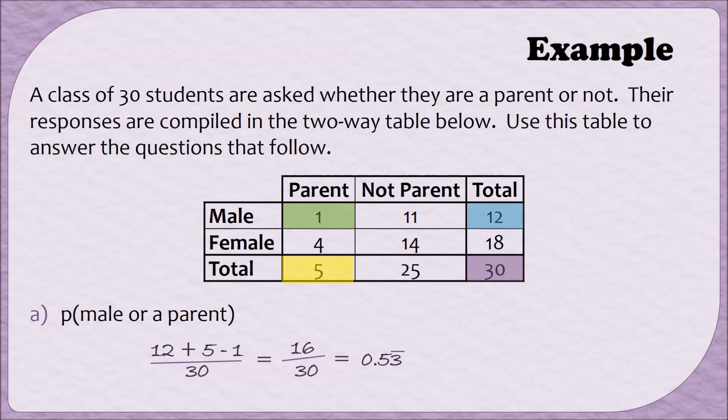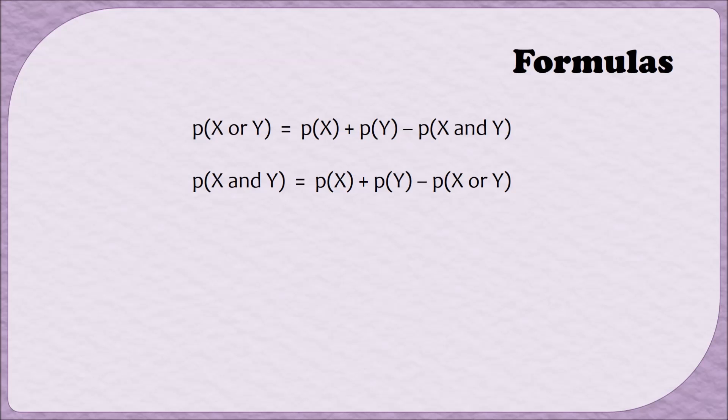So here's what that formula looks like. The first formula is the one that we just mentioned. You can find the probability of X or Y by finding the probability of X plus the probability of Y and subtracting the probability of X and Y. If you rearrange that first formula you can end up with the second formula. The probability of X and Y is the same as the probability of X plus the probability of Y minus the probability of X or Y. Now one thing to note is that these formulas can be a little bit tricky if you always think literally in terms of X's and Y's.